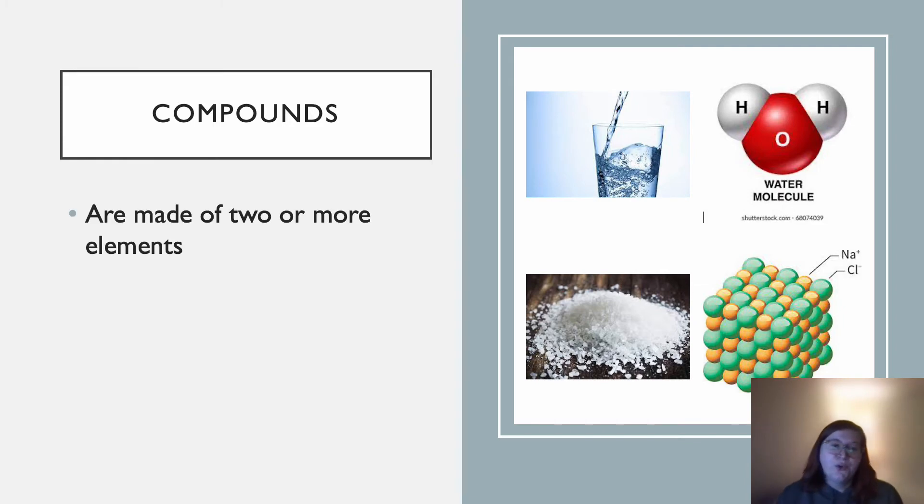Compounds are made of two or more elements. Atoms are joined together in compounds to make molecules. And these molecules can look like this, where they're a box.